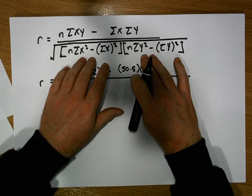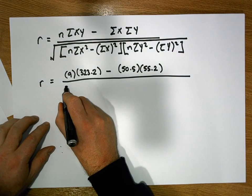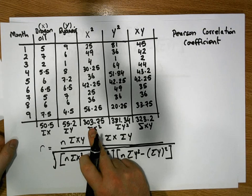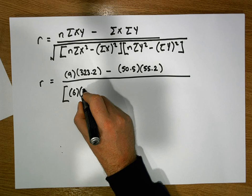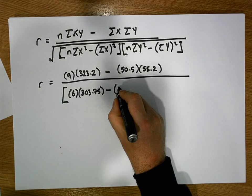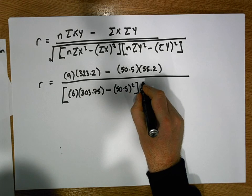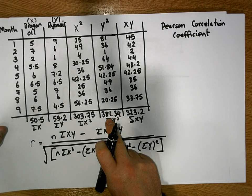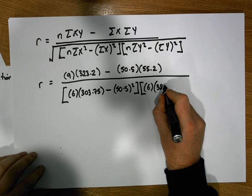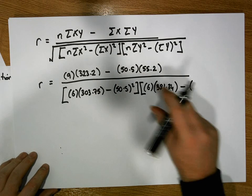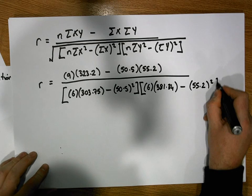For the denominator, the left factor is n (9) times the sum of x squareds (303.75), minus the sum of x's all squared (50.5 squared). That is multiplied by n (9) times the sum of y squareds (381.34), minus the sum of y's all squared (55.2 squared). And it is the square root of that entire product.